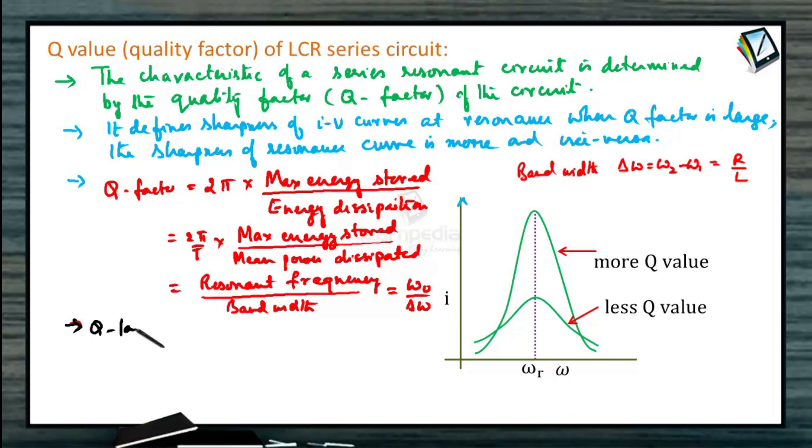That is, Q factor is VL by VR or VC by VR. So either way we can write VL by VR or VC by VR. That is ω₀L by R or 1 by ω₀CR.